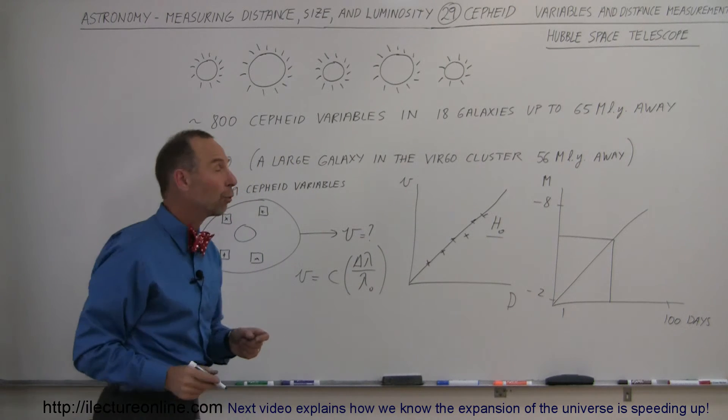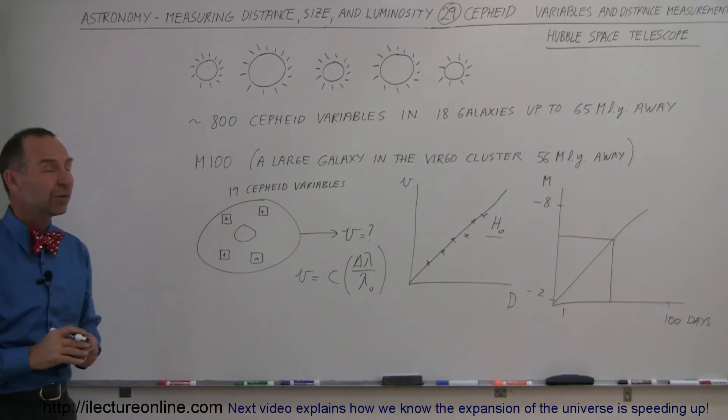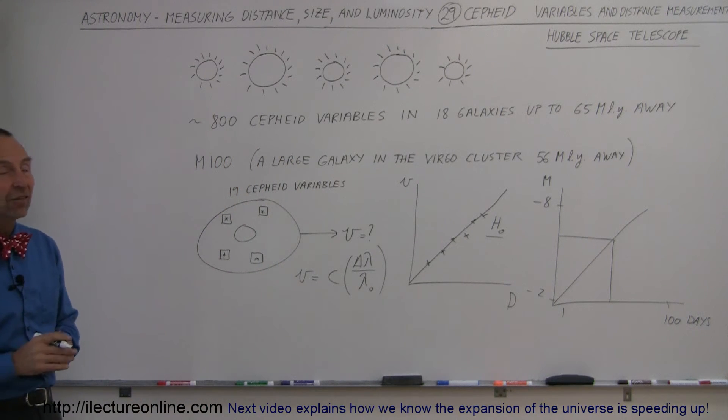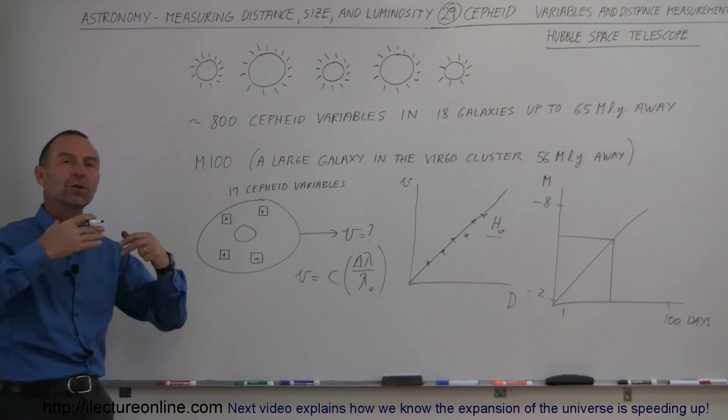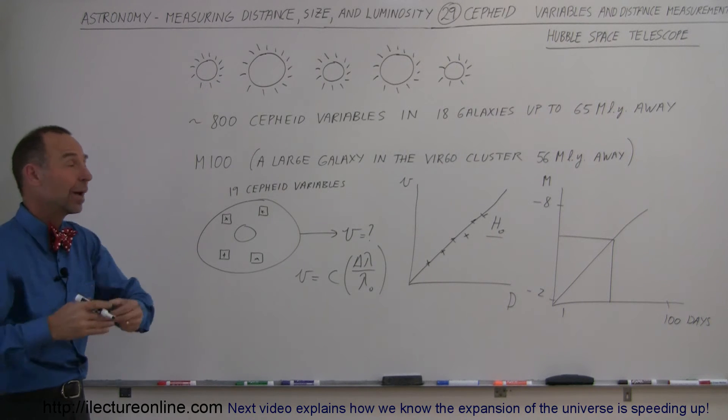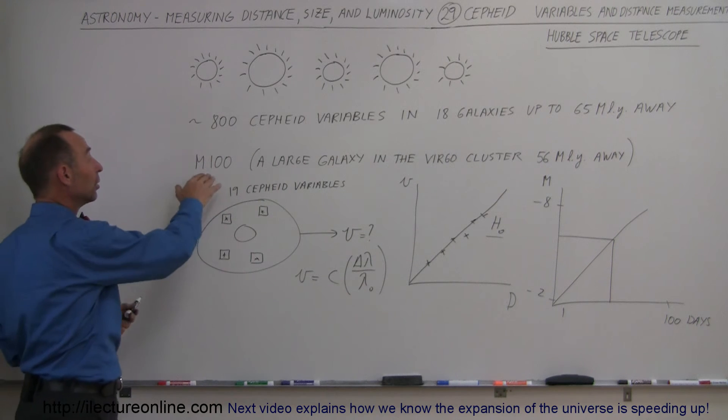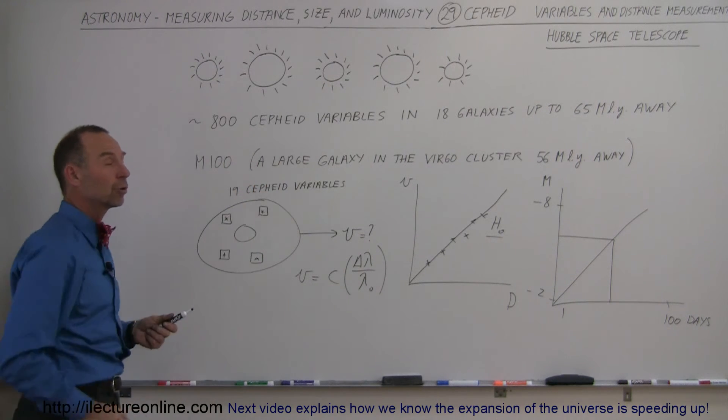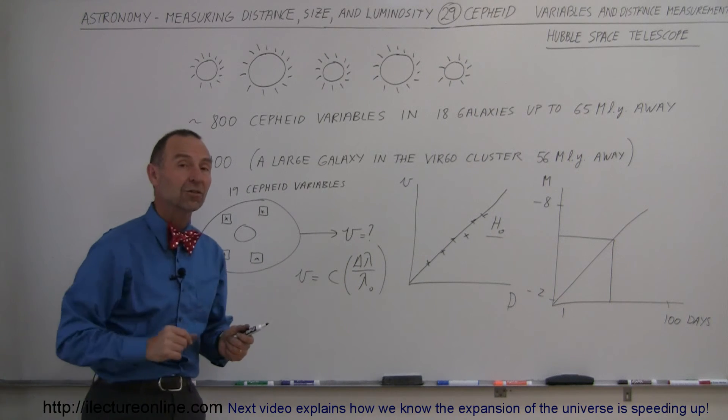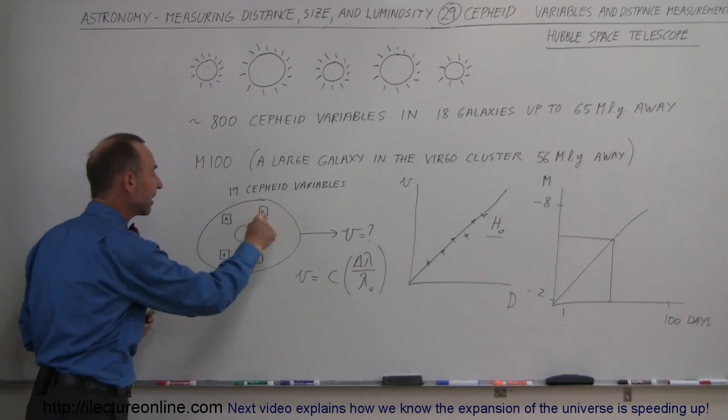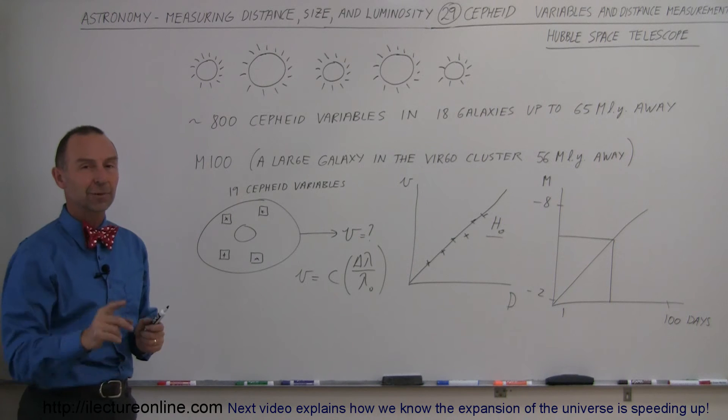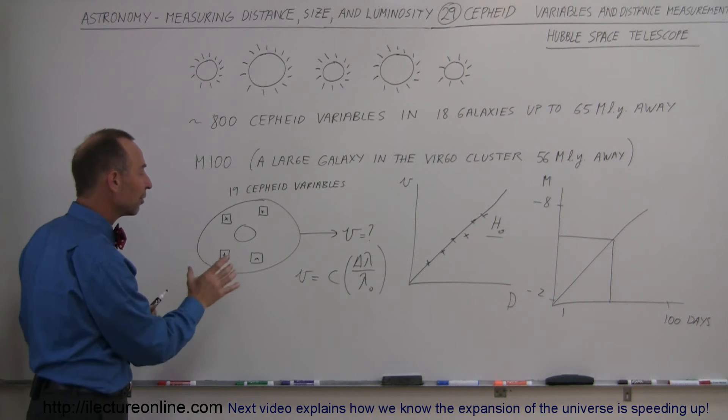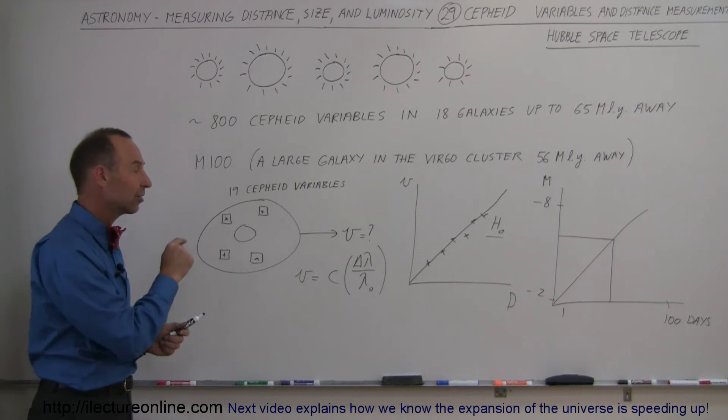Well, we did that for about 800 Cepheid variables in as many as 18 different galaxies as far away as 65 million light years. Remember, without the Hubble telescope, we couldn't measure Cepheid variables that far away. One good example is M100, a very large galaxy in the Virgo cluster, 56 million light years away. We were able to detect 19 Cepheid variables in that one galaxy alone, giving us a very accurate reading as to the distance of that galaxy.